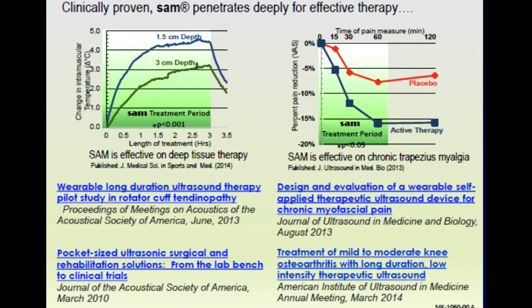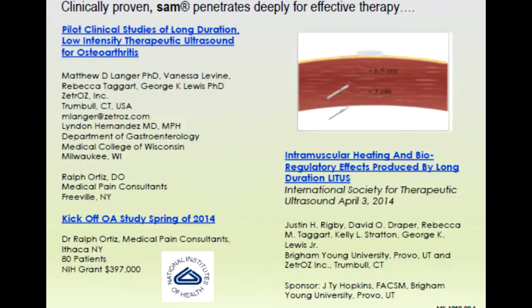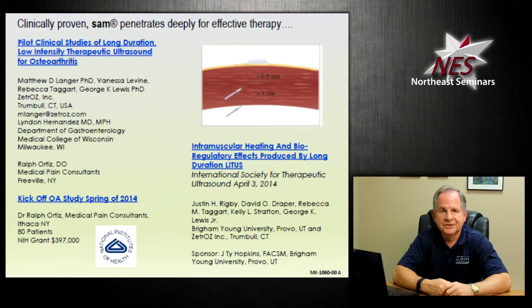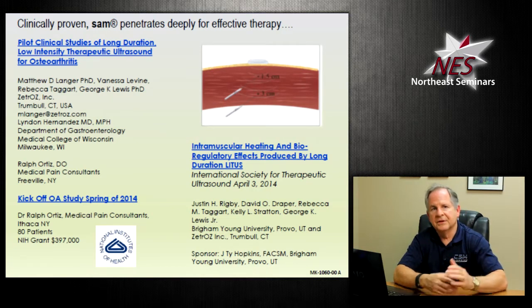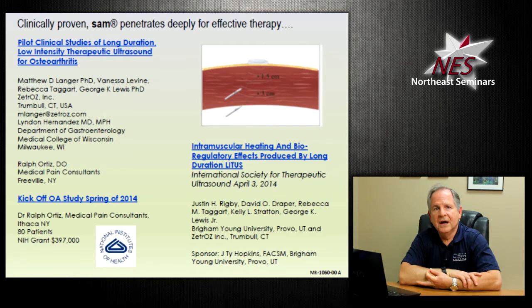Several studies done at Cornell University, who developed this device, have shown that the SAM unit effectively decreases muscle spasms and pain, and is also very beneficial for tendon problems such as rotator cuff tendinopathy or patellar tendon issues. We're going to use it in the clinic on a patient with a calf strain. Several pilot studies using continuous ultrasound have shown very encouraging benefits, so let's head out to the physical therapy clinic to apply it and get patient feedback.